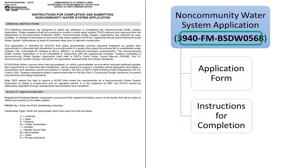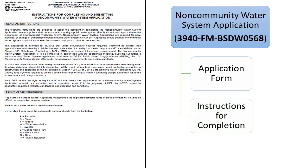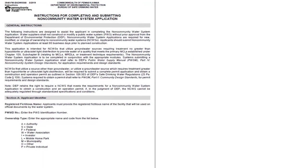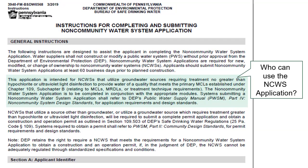The non-community water system application consists of two documents, both of which have the same document number. The instructions for completing and submitting the non-community water system application go over how to complete each section of the application. The general instructions stress that the non-community water system application is intended for systems utilizing groundwater that requires treatment no greater than hypochlorite or ultraviolet light disinfection to meet all primary MCLs. All systems submitting a non-community water system application should follow the guidance provided in the Public Water Supply Manual Part 4, Non-Community System Design Standards.